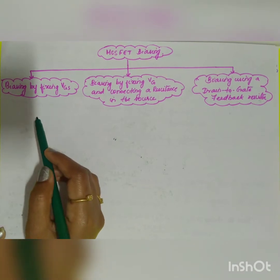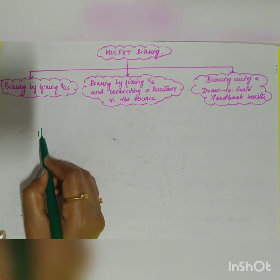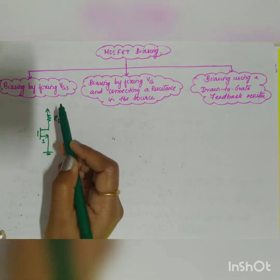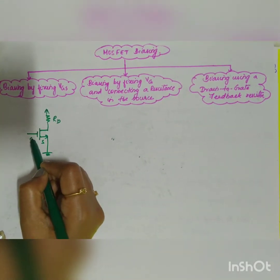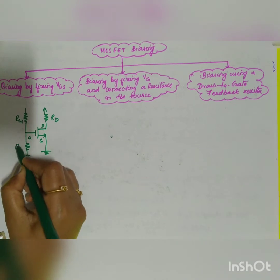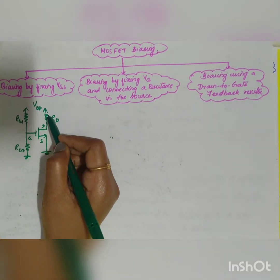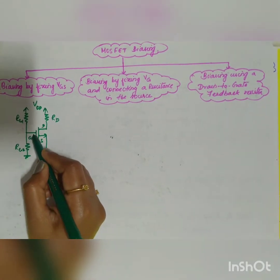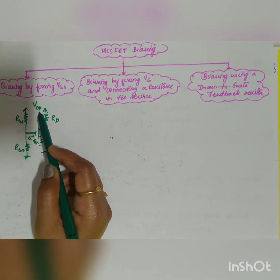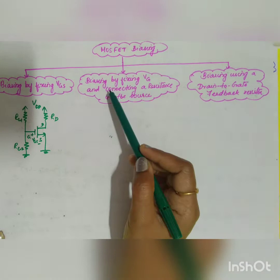The circuit diagram of the first configuration — biasing by fixing VGS — uses an NMOS with the source grounded, a drain resistance RD across the drain, and a voltage divider biasing RG1 and RG2 across the gate. A common supply VDD is provided to RD and the gate. VGS is fixed by means of this voltage divider biasing through VDD.